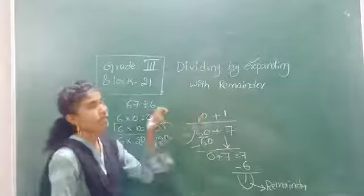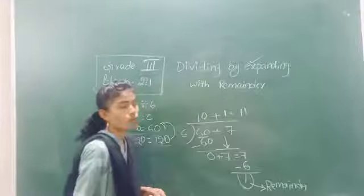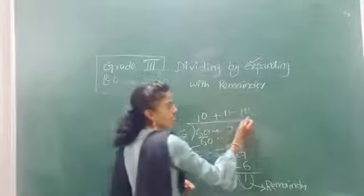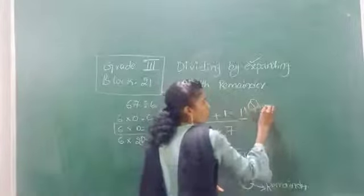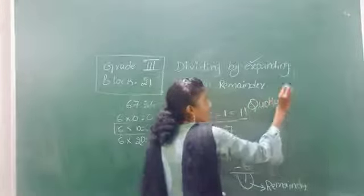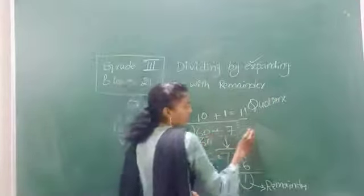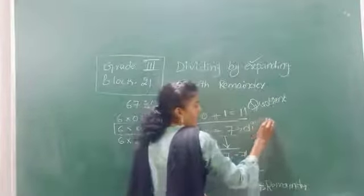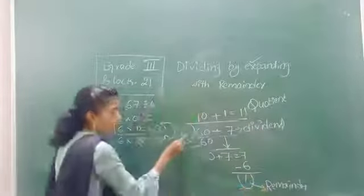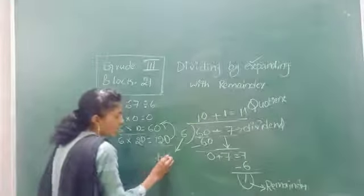And what is the answer here? 10 plus 1 equals 11. What is the answer? 11. What do you call this answer? Quotient. And the number which is being divided is called the dividend. The number by which we are dividing is called the divisor.